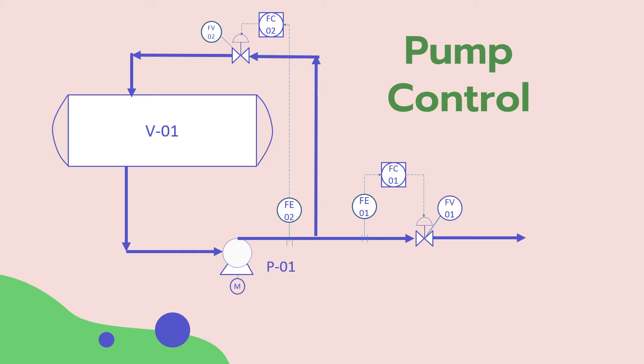What if we want to add an alarm to alert the operator that the flow is low? We can add the 'L' letter here. So now this means that there should be an alarm so that the operator realizes that there is an issue with the pump flow.